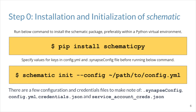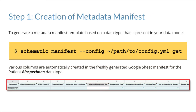Most of the functionalities in Schematic are built around a central schema.org-based ontology with entities, properties, and relationships that can describe various biomedical objects. Before we get into the various steps of the data curation lifecycle, we need to make sure we have the right set of credentials and configuration files that are necessary for Schematic to work. Follow the documentation to make sure you have the right configuration. The first step in the data curation lifecycle is annotation, and the command you can run to generate the Google Sheet interface for a specific data type is shown on this slide. The result is a Google Sheet with standard columns for annotating a patient biospecimen dataset.